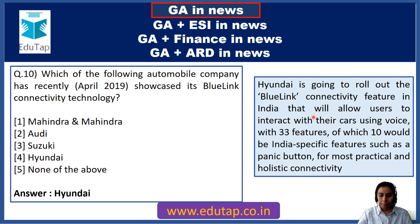Question 24: Who among the following has been recently elected as the mayor of Chicago? The answer is Lori Lightfoot. She is the first open gay Black woman to be elected as mayor of Chicago, which is the largest US city, and the first such mayor in the history of the US.